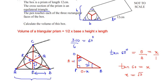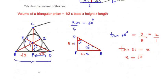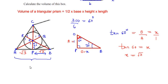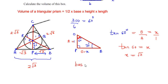We found part of the base PB = √3. Since all triangles are the same, AP also equals √3. The total base = √3 + √3 = 2√3. Since it is an equilateral triangle, all sides are equal, so AB = BC = AC = 2√3.